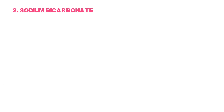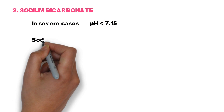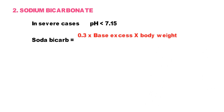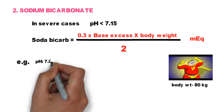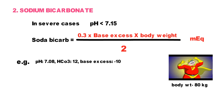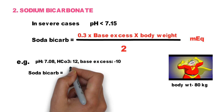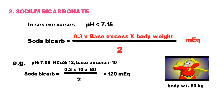Second in treatment is sodium bicarbonate, which should be reserved for severe cases where pH is less than 7.15. Soda bicarb to be given is calculated as: 0.3 × base excess × body weight, divided by 2 mEq/mL. For example, our diabetic superman weighs 80 kg, pH is 7.08, bicarb is 12, and base deficit is 10 mEq/L. So soda bicarb = 0.3 × 10 × 80 ÷ 2 = 120 mEq, after which another ABG is measured after half an hour.